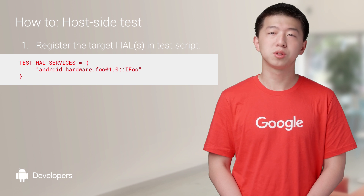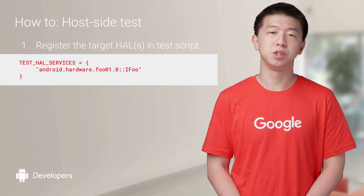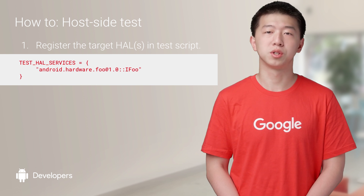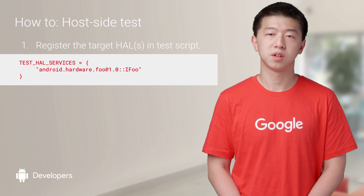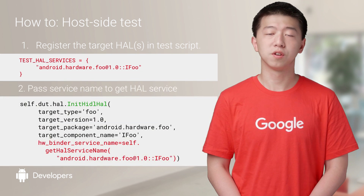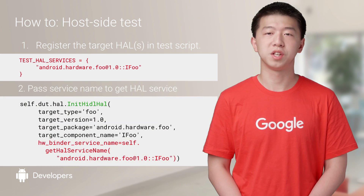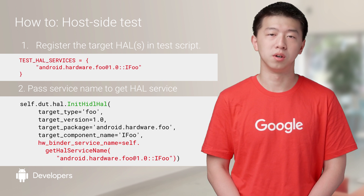It is simpler to enable this feature for host-side HAL tests. Similarly, we need to claim the targeting HALs in your test script as a list called test HAL services, and then call the function getHALServiceName to pass the found service name during the HAL initialization call.